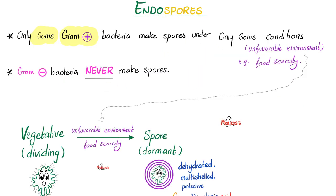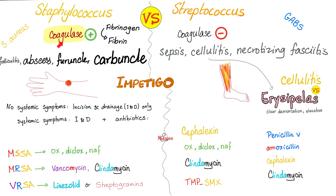Can gram-negative bacteria make spores? No. How about gram-positives? Only some can. Staph aureus is not spore-forming — in fact, none of the staph are, and neither are strep. Staphylococcus has coagulase; Streptococcus does not. That's why staph gives you folliculitis, furuncle, carbuncle — all confined to a certain locale — because coagulase clots it in a distinct area and it does not spread as far as streptococci. Streptococci cause sepsis, cellulitis, necrotizing fasciitis, erysipelas — widespread skin infections — versus an abscess, which is local. These are some mechanisms by which bacteria evade your immune system.